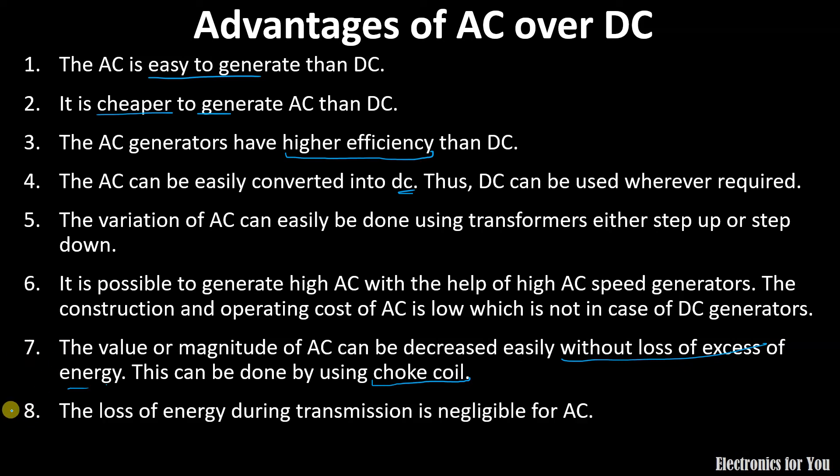The last advantage is somewhat controversial. The loss of energy during transmission is negligible for AC. It is negligible for AC but for high voltage DC also, it is very very less than the AC. Therefore, we can say that the loss of energy during transmission is negligible for AC but for high voltages DC, it is actually better. These are the advantages of AC over DC. That's why we generally prefer AC.